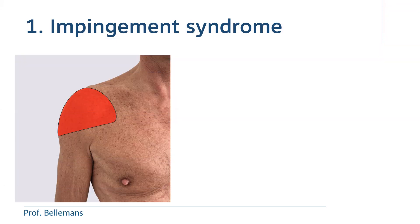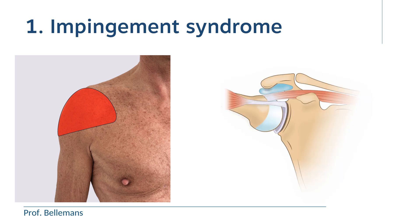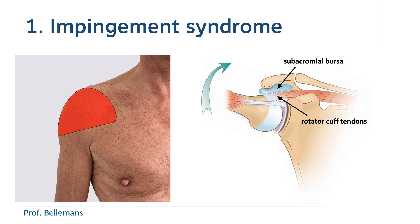Number one, and by far the most common cause of shoulder pain, is impingement syndrome. Impingement syndrome, which is in fact an umbrella term, involves a number of structures becoming squeezed each time the arm is brought above shoulder level, causing inflammation or even damage. The structures involved are the subacromial bursa and the rotator cuff tendons, which become trapped or crushed between the humeral head and the lower edge of the acromion each time the arm is lifted above the shoulder.